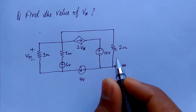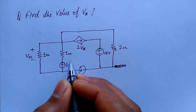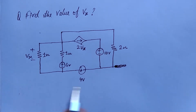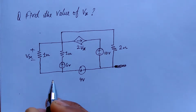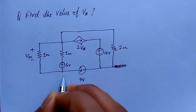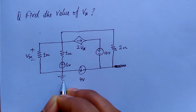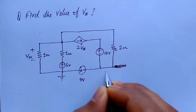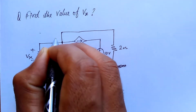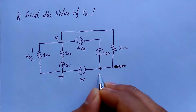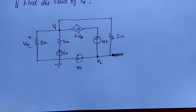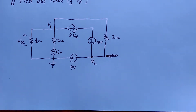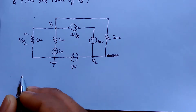This is a network theory problem asking us to find the Vx value. First, I'm identifying the nodes — there are two nodes clearly visible. I'm taking this one as ground, this one as node 1, and this one as node 2, with voltages V1 and V2. By node analysis we can solve this easily.